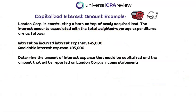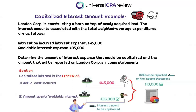Let's go through a quick example, because we also need to know what amount will be reported as interest expense on the financial statements. Landon Corp is again constructing a barn. The interest amounts associated with the total weighted average expenditures are: interest expense incurred of $45,000, and avoidable interest of $35,000. The lesser of the two — $35,000 — is the total capitalized interest. The amount reported on the income statement is always the difference between the actual cost incurred and the avoidable interest, so $45,000 minus $35,000 equals $10,000 reported on the income statement.